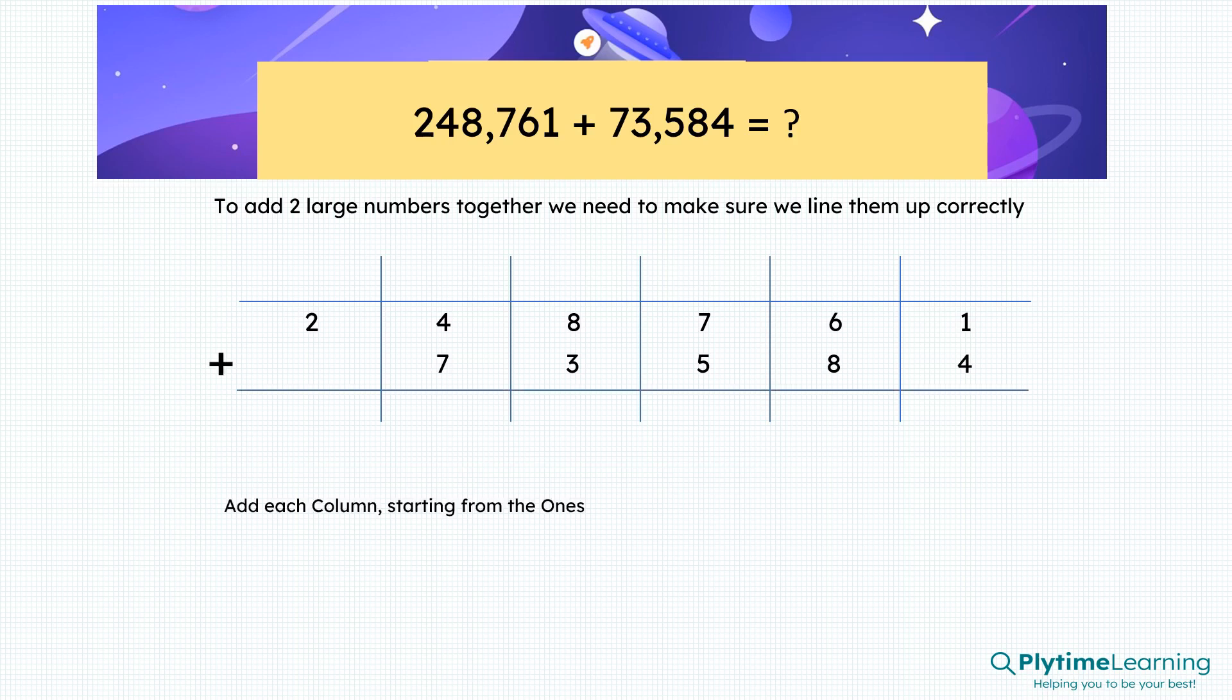Now we need to add each column starting from the ones. And each column is a single digit addition. Start in the first column, one plus four equals five. Now the next column into the tens.